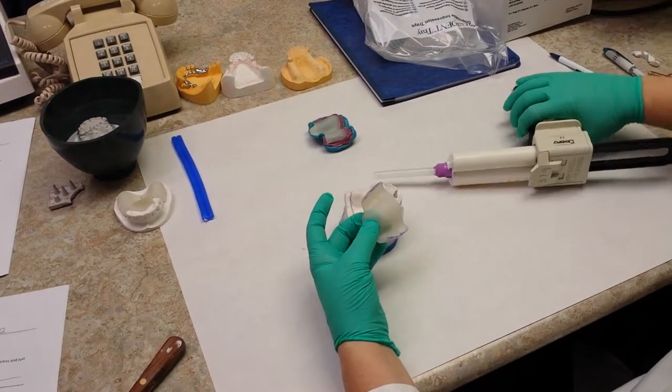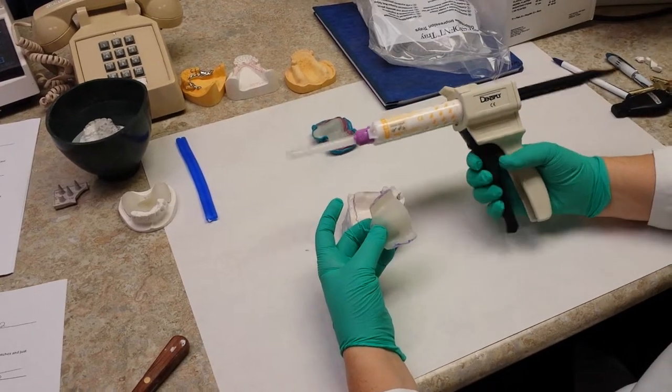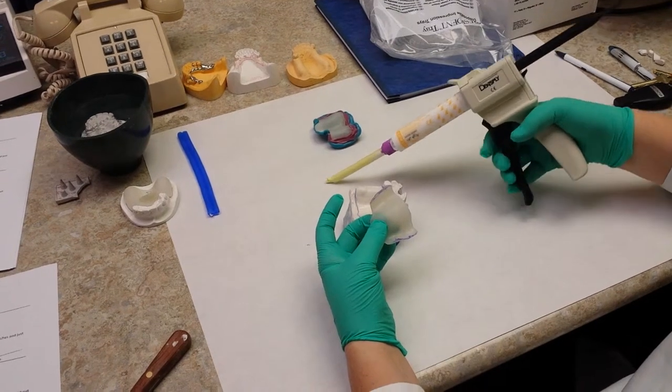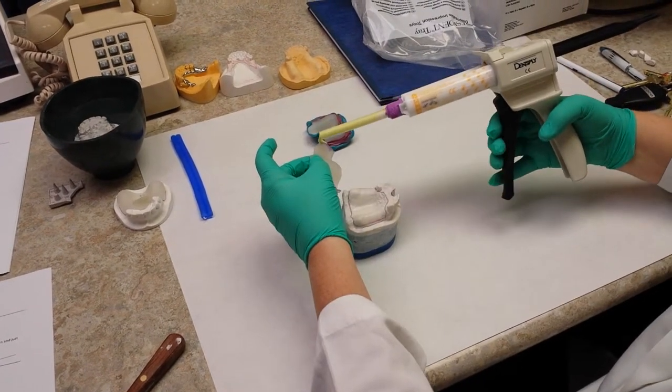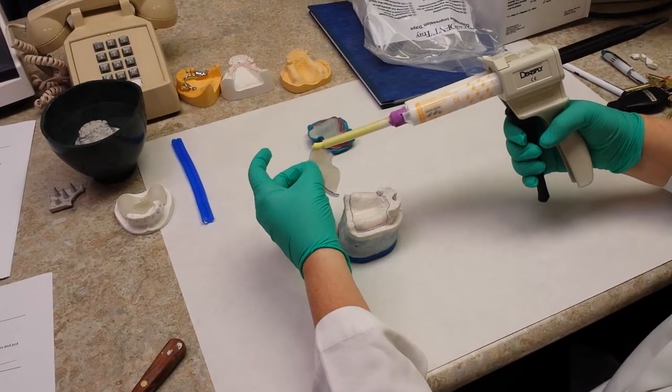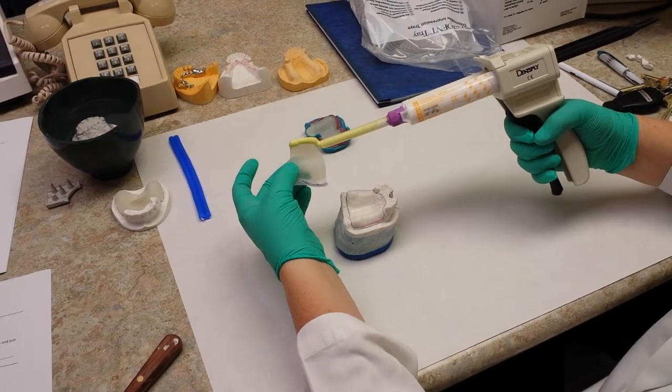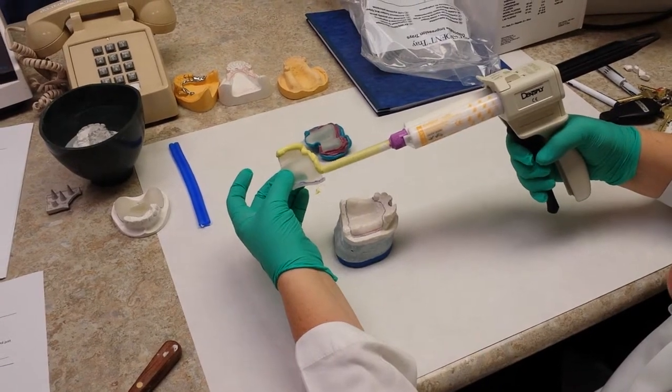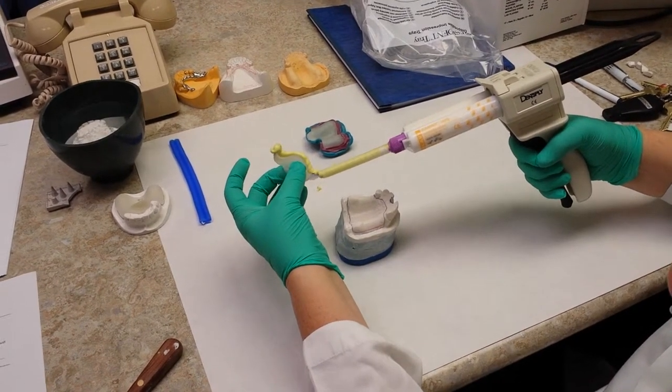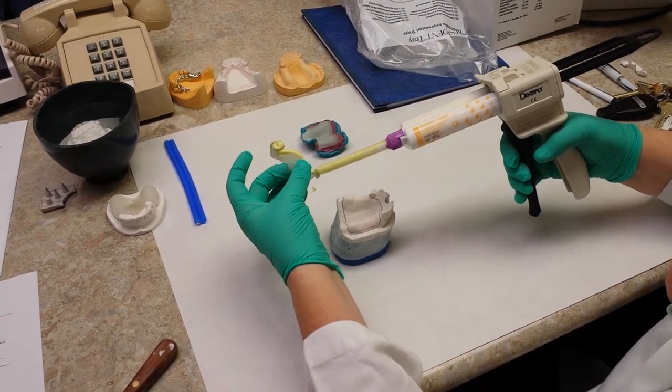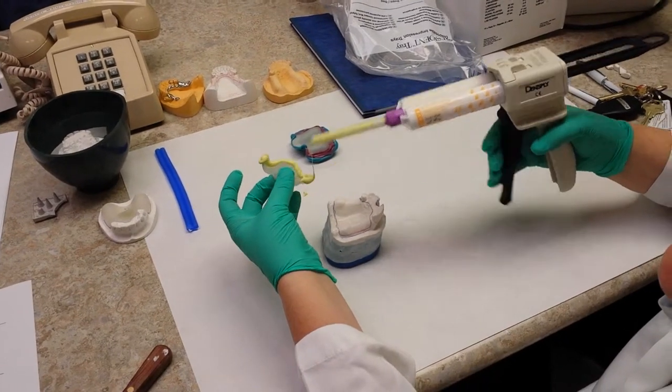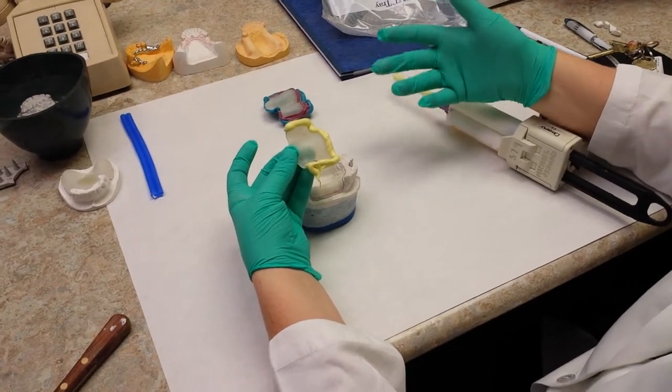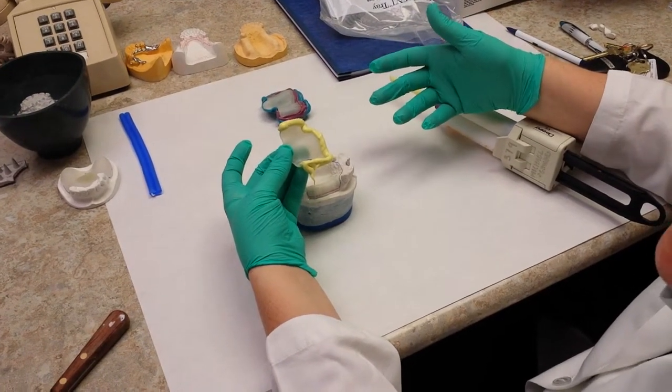So this material, we use a heavy body, and you can use any PBS. If it's a fast set, it's better because then it sets really fast for you. We're going to place it on the edge of the tray, and you notice I'm placing it on the edge that has adhesive just on the edge, and I'm placing it on the edge that has any movement of the tissue. Does the tissue move across the front? No, it's just the hard palate. So there's no reason to border mold the hard palate.